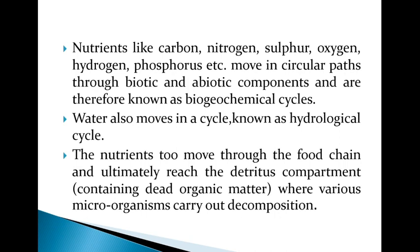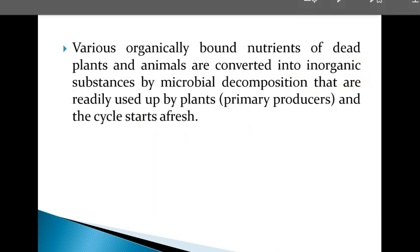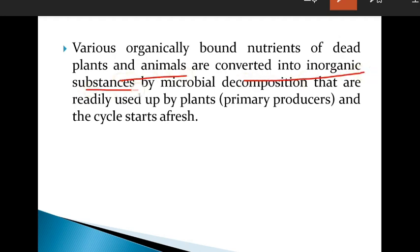Nutrients ultimately reach the detritus compartment — detritus means the dead compartment. The plants and animals are converted into inorganic substances, which are again released into the soil. These are then readily used by plants, which obtain those nutrients again, and the cycle starts afresh. This cycling starts from soil to plants, plants to primary consumers, then to secondary consumers — this is called the biogeochemical cycle.